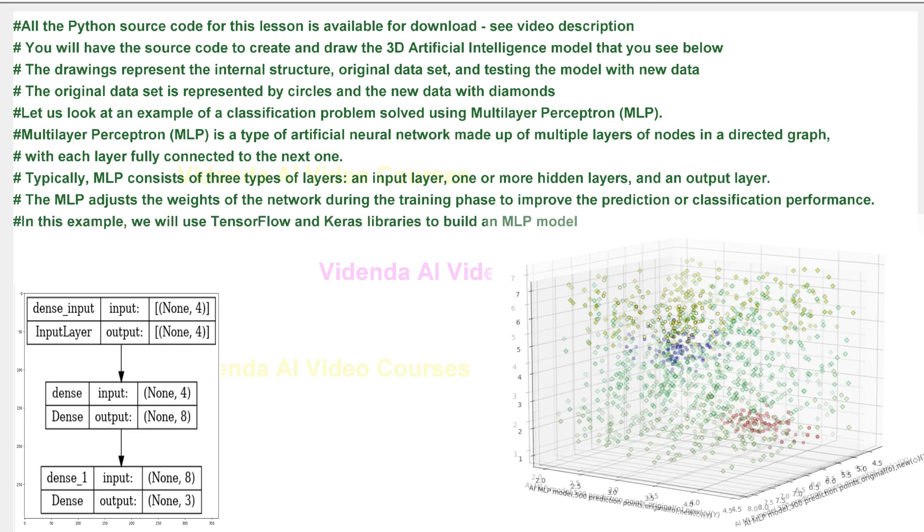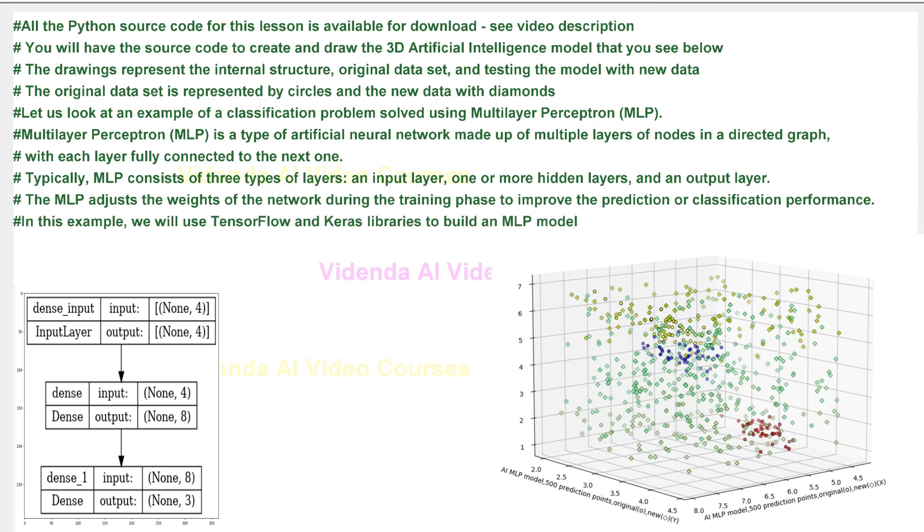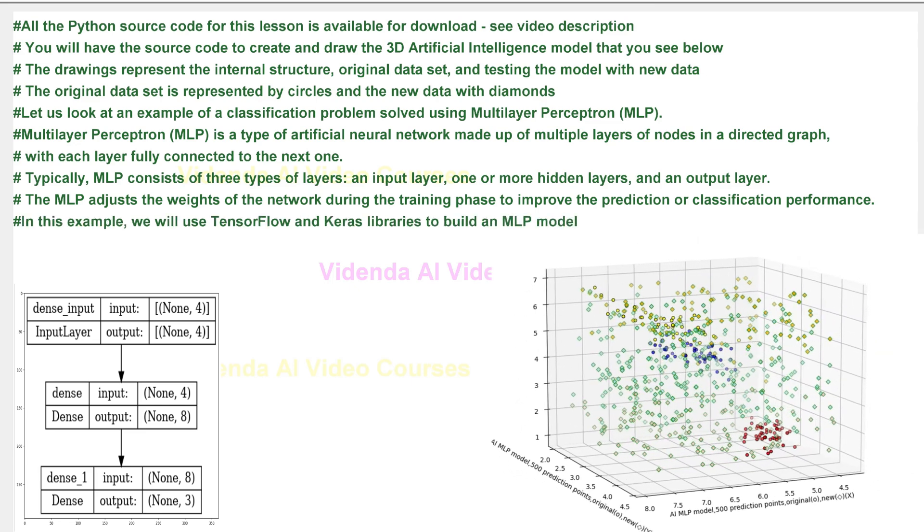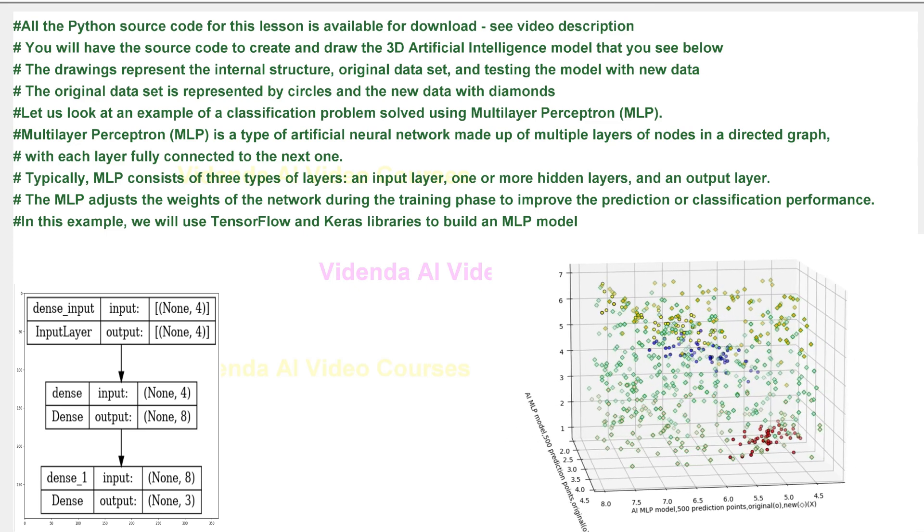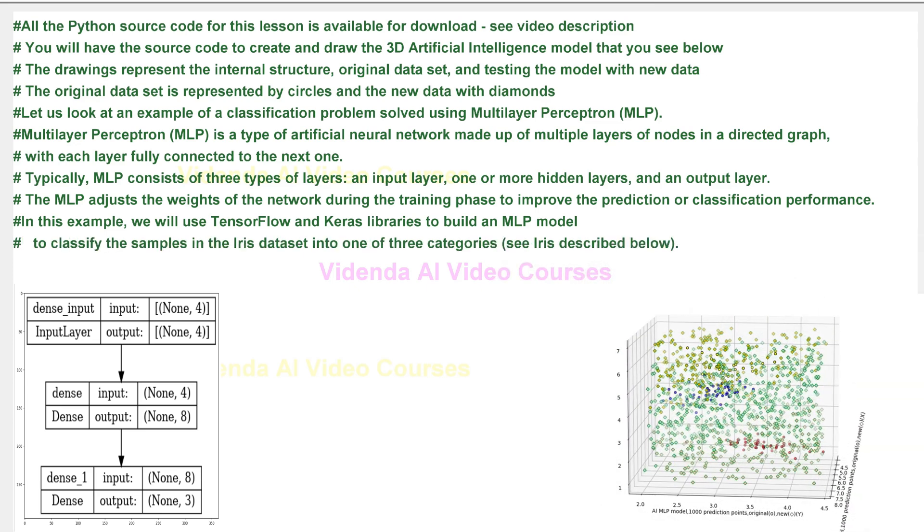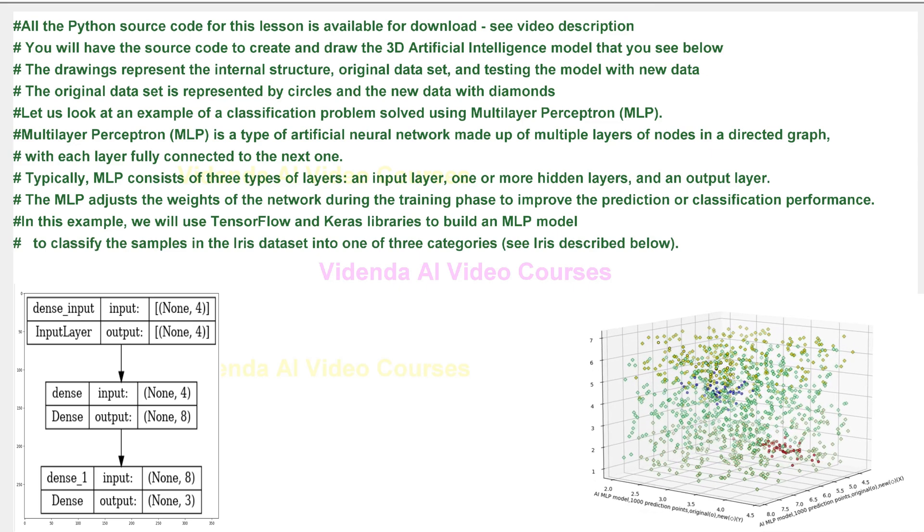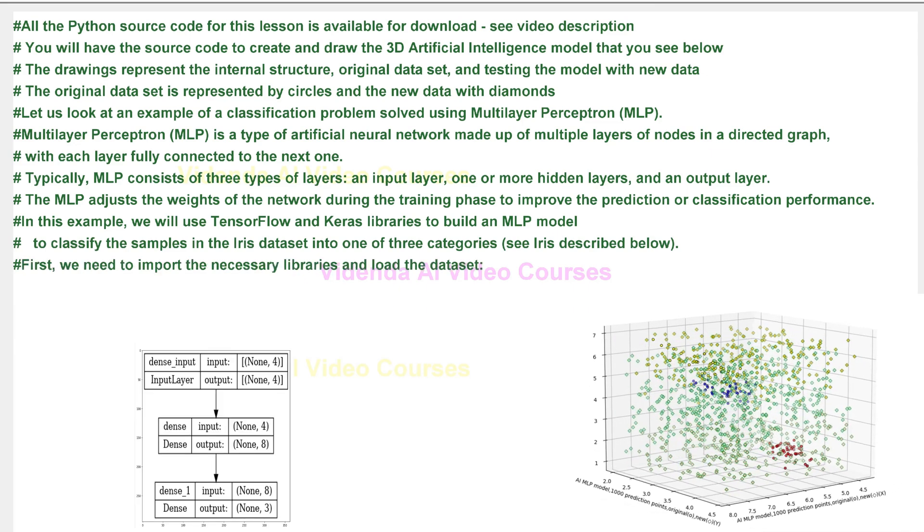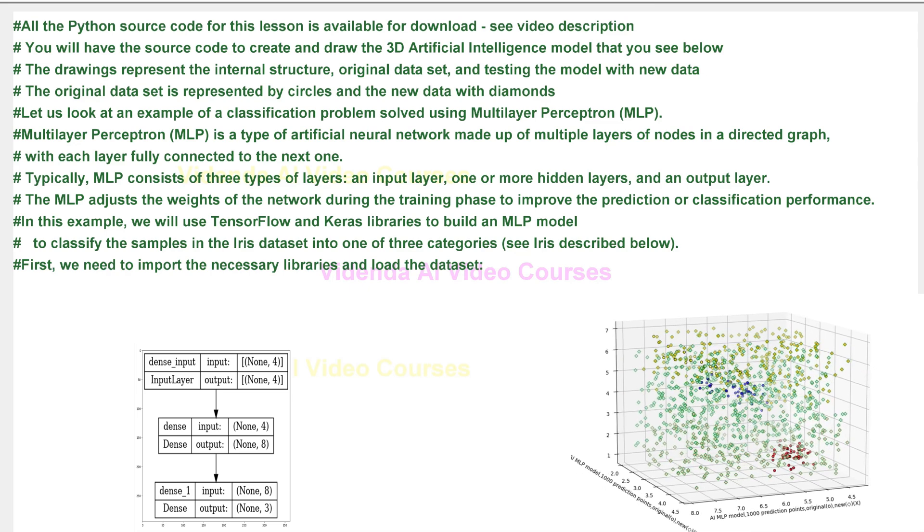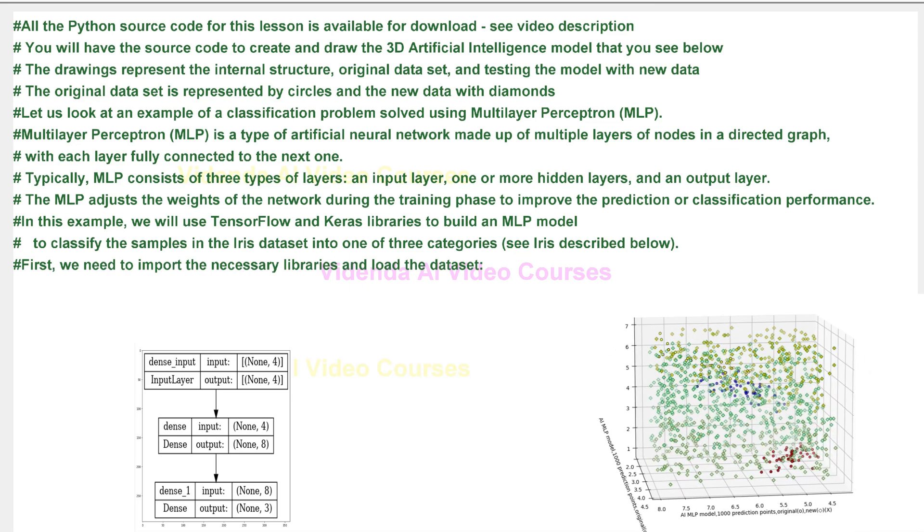The MLP adjusts the weights of the network during the training phase to improve the prediction or classification performance. In this example, we will use TensorFlow and Keras libraries to build an MLP model to classify the samples in the IRIS dataset into one of three categories.